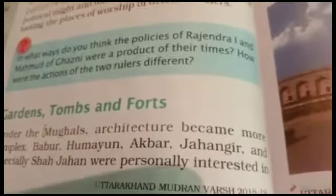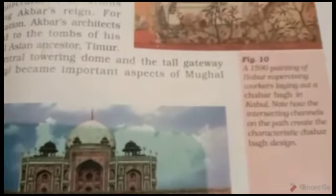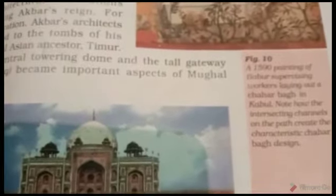The first Mughal emperor Babur was interested in laying out gardens, which were also known as char bagh. During the rule of Akbar, domes and tall gateways became important parts of Mughal architecture.